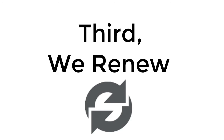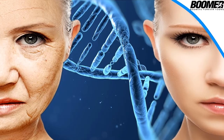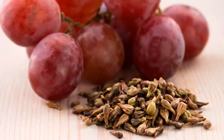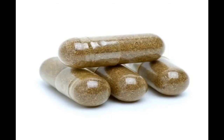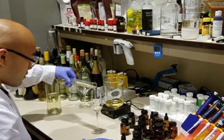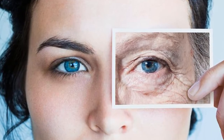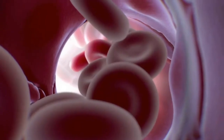Third, we renew. During the rebuilding process, cells need to be renewed. Boomer's Supermuscadine triggers youthful gene expression by clearing away the garbage cells. Boomer's Supermuscadine combines the power of resveratrol and quercetin in one easy-to-use capsule. Recent studies show that the combination of these two powerful antioxidants are proven to speed up the death of old, inefficient cells that take up room in your body and cause premature aging at the genetic level. The clearing away of these garbage cells makes room for renewed cells and tissue to take over.